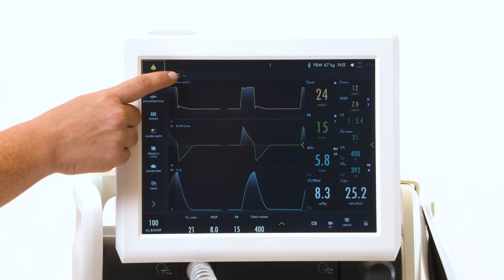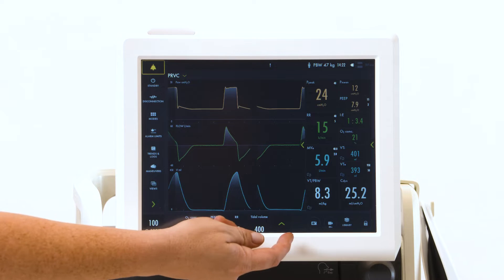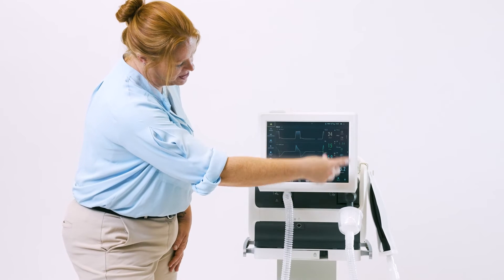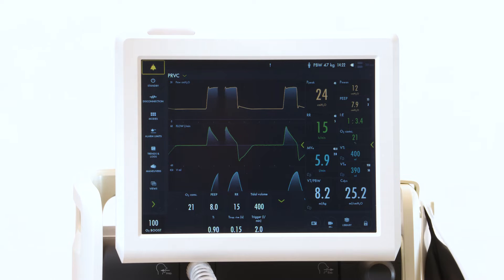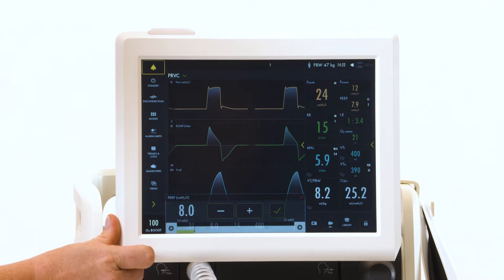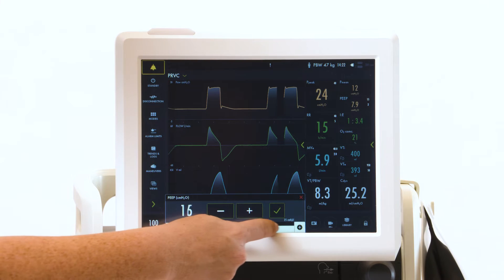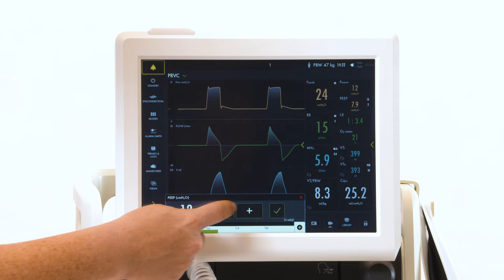Your patient mode is up here, with your settings at the bottom. On the right are your measured values. Touch the arrow to open up your advanced settings. Touch a setting. To make changes, you can slide along the bar or add and subtract.